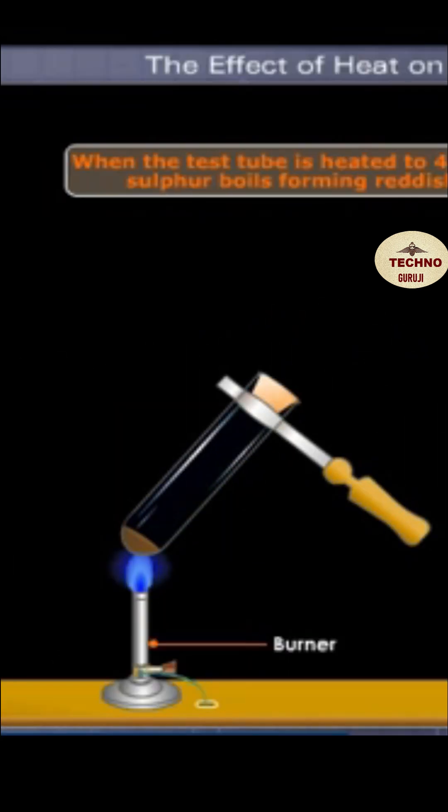When the test tube is heated to four hundred and forty-four degrees Celsius in a limited air supply, sulfur boils, forming reddish-brown vapors. The vapors of sulfur condense on the cooler parts of the test tube to form pale yellow powder, commonly called flowers of sulfur.